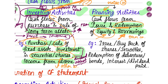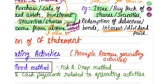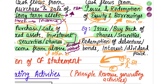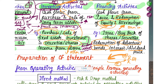When you issue shares you raise money, and when you buy back your own shares you are telling the shareholder to return the shares in exchange for money — that is a cash outflow. Similarly, when redeeming your own debentures or bonds you spend money. So issue of shares raises cash, buyback and redemption spend cash — all of this falls under financing activities.